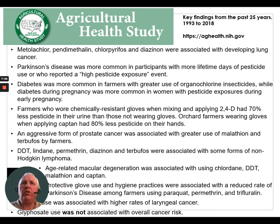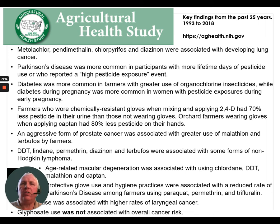Farmers who wore chemically resistant gloves when mixing and applying 2,4-D had 70% less pesticide in their urine than those not wearing gloves. Orchard farmers wearing gloves when applying captan had 80% less pesticides on their hands. An aggressive form of prostate cancer was associated with greater use of malathion and terbufos by farmers. DDT, lindane, pyrethrin, diazinon, and terbufos were associated with some forms of non-Hodgkin lymphoma. Age-related macular degeneration was associated with chlordane, DDT, malathion, and captan. Protective glove use and hygiene practices were associated with reduced rates of Parkinson's disease among farmers using paraquat, pyrethrum, and trifluralin. Alachlor was associated with higher rates of laryngeal cancer. Glyphosate was not associated with overall cancer risk in these findings.